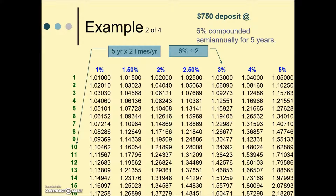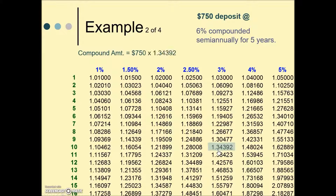How many compounding periods are there? There are five years times twice a year — five times two — so there would be a total of 10 times that interest is compounded. Where the row for n = 10 and the column for i = 3% intersect gives us the multiplier that replaces the second half of the compound interest formula. Multiplying it by our principal gives a total amount of $1,007.94 after five years.